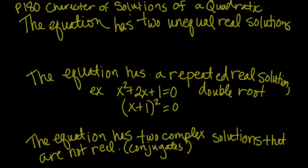On page 180 in your text, you can see that in the little yellow box, there's a character of solutions. And what are we looking at? Yes, we're looking at the discriminant. If the equation has two unequal solutions, the discriminant b²-4ac is going to be greater than zero. We have two unequal real solutions.